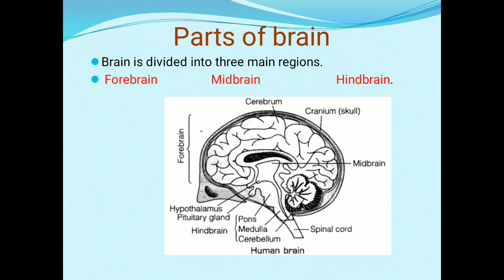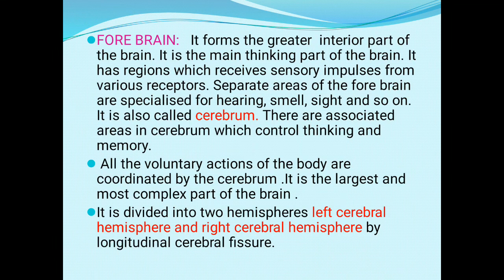Now, what is the structure of the brain? The human brain is highly complicated and most advanced. The brain is divided into three main regions: forebrain, midbrain, and hindbrain, as you can also see labeled in the figure.